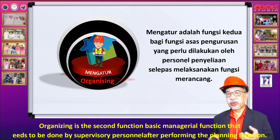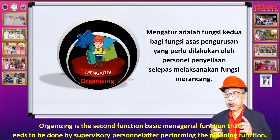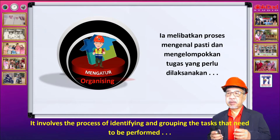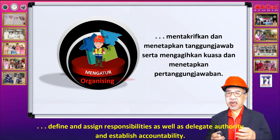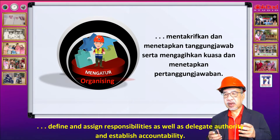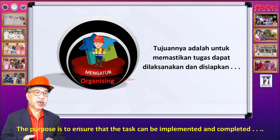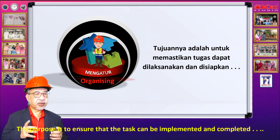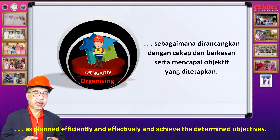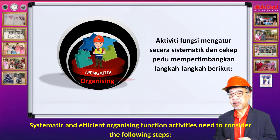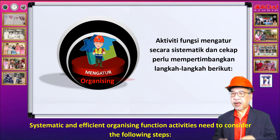Mengatur adalah fungsi kedua bagi fungsi asas pengurusan yang perlu dilakukan oleh personel penyeliaan selepas melaksanakan fungsi merancang. Ia melibatkan proses mengenalpasti dan mengelompokkan tugas yang perlu dilaksanakan, mentakrifkan dan menetapkan tanggungjawab serta menyerahkan kuasa dan menetapkan pertanggungjawab. Tujuannya adalah untuk memastikan tugas yang diarahkan dapat dilaksanakan dan disiapkan sebagaimana dirancang dengan cekap dan berkesan serta mencapai objektif yang ditetapkan. Aktiviti fungsi mengatur secara sistematik dan cekap perlu mempertimbangkan langkah-langkah berikut.